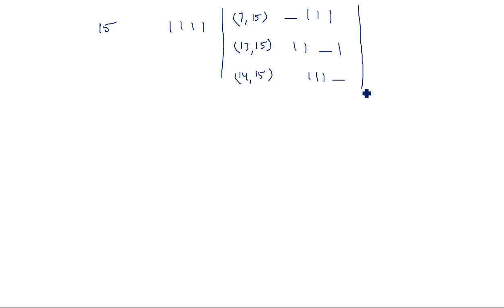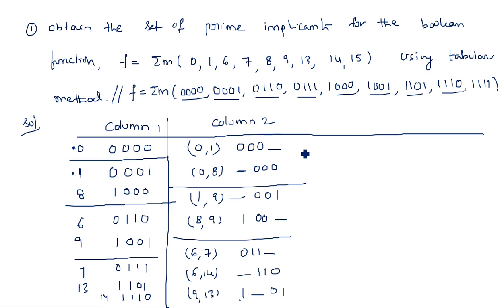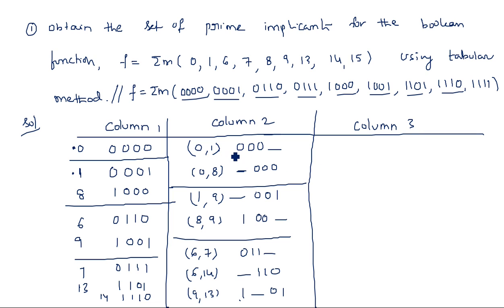Now take Column 3 and again compare the groups. Compare (0,1) with (8,9), and (0,8) with (1,9): for the group 0,1,8,9 — since except one position they are common — we get -0,0-.